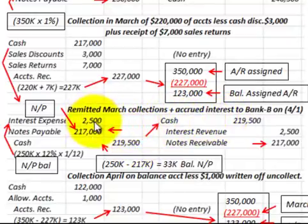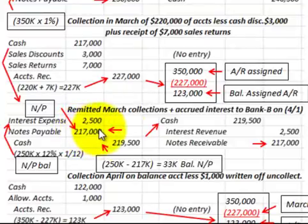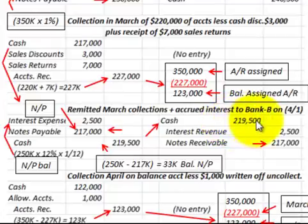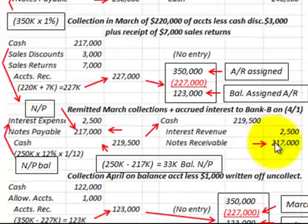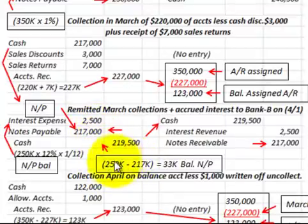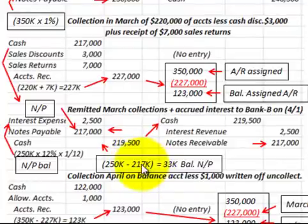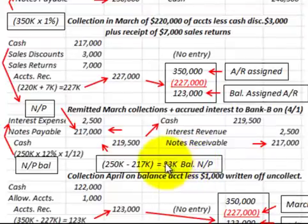The $219,500 payment covers the interest expense plus the notes payable reduction. Bank B receives $219,500 in cash, records interest revenue of $2,500, and reduces their notes receivable by $217,000. After this remittance, the remaining notes payable balance for Corporation A is $250,000 less $217,000, leaving $33,000.